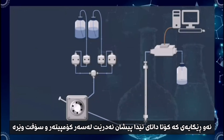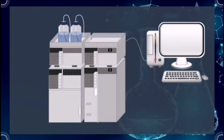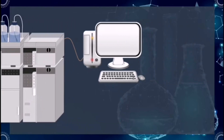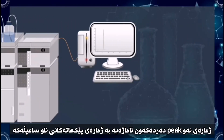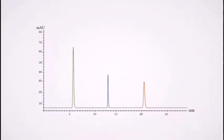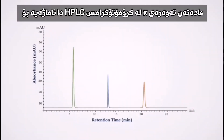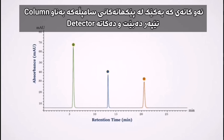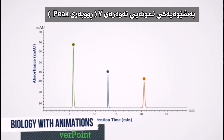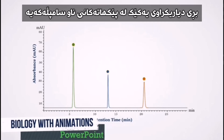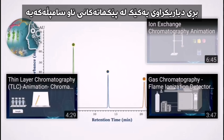The manner in which the final data is displayed is based on the computer and software. The number of peaks present can indicate how many components are in the mixture. Usually the x-axis of the HPLC chromatogram shows the amount of time taken for the analytes to pass through the column and reach the detector. Typically the y-axis, or the area of the peak, is a reflection of the amount of a specific analyte that is present.